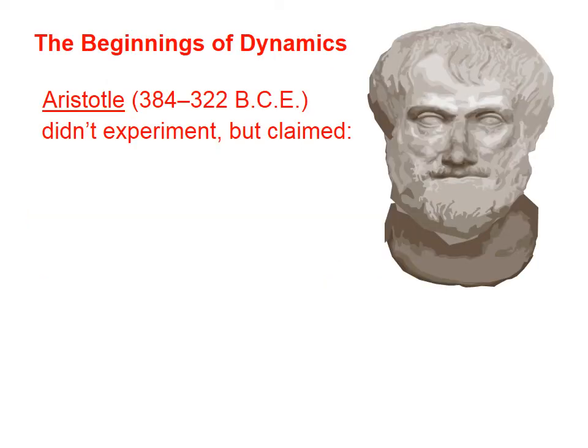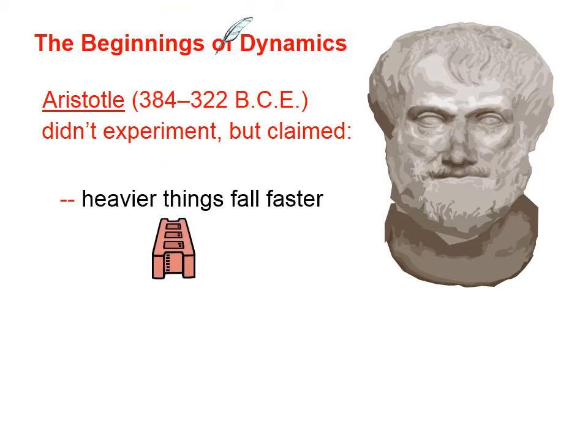Our thinking about dynamics began with Aristotle. Aristotle didn't experiment, but he claimed, among other things, that heavier things fall faster — bricks, for example, fall faster than feathers. However, this claim doesn't quite hold water. If we were to take two bricks and tie them together with a rope, the two bricks together don't fall any faster than one brick separately. So while the 'heavier things fall faster' claim seems to make sense, it doesn't apply to all cases.